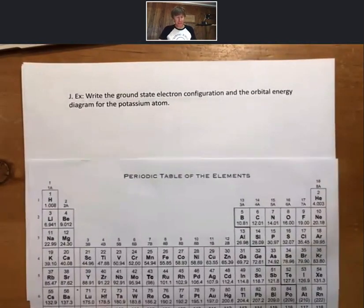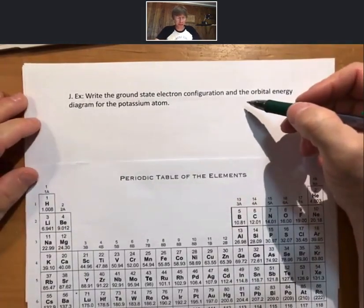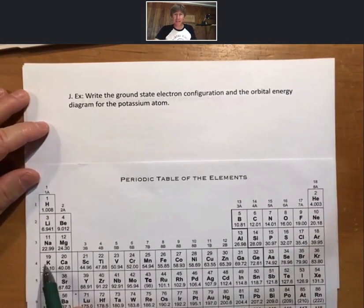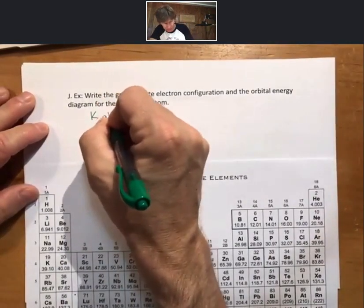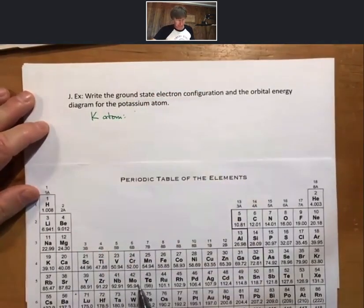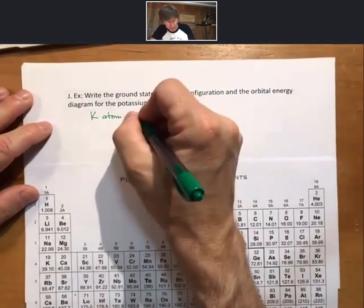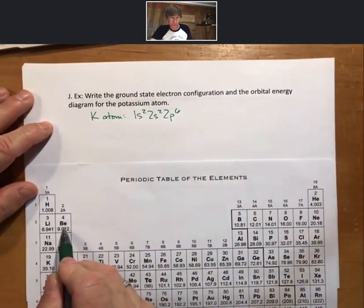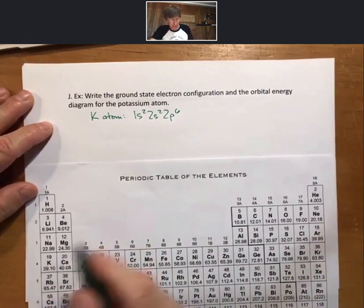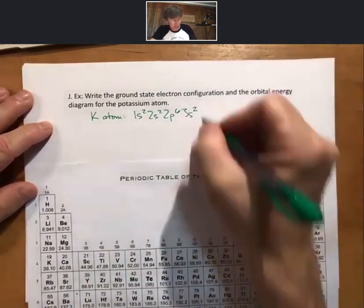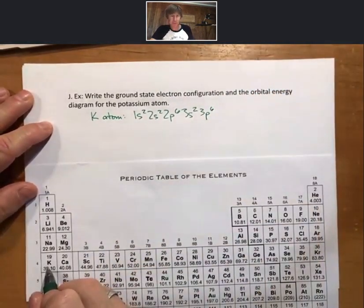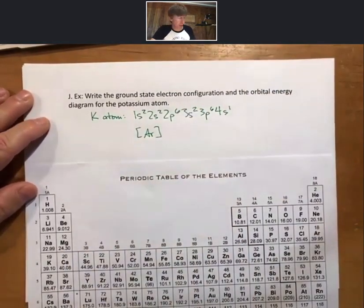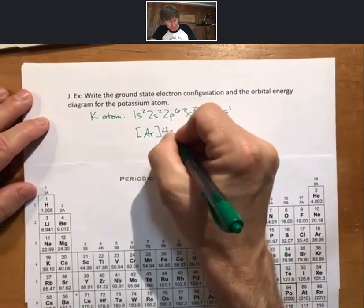Now let's do something similar for potassium. We'll do the electron configuration and the orbital energy diagram for the potassium atom. Potassium is element 19, so that's 19 electrons. The full configuration is 1s2, 2s2, 2p6, 3s2, 3p6, 4s1. Or alternatively, with a noble gas core: [Ar] 4s1.